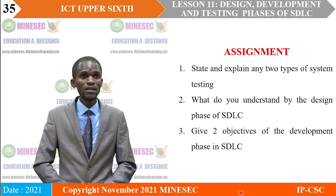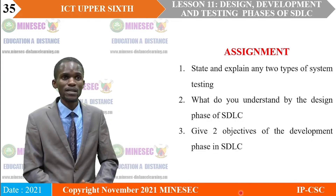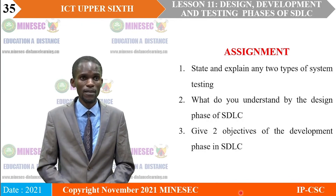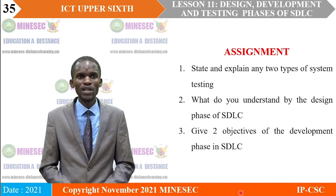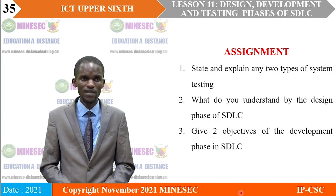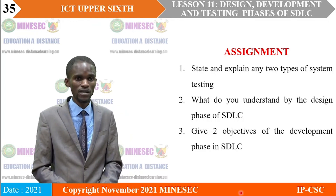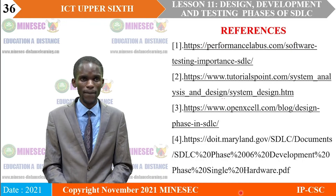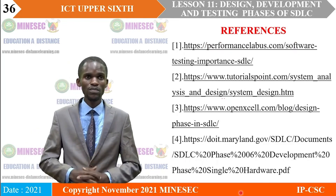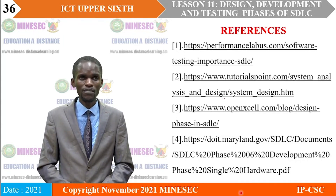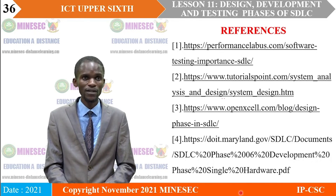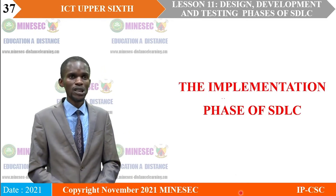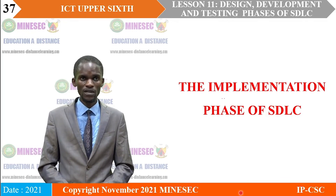Having come to the end of our lesson, you will need to carry out the following assignment before the next lesson: state and explain any two types of system testing; explain what you understand by the design phase of the SDLC; and give two objectives of the development phase in the SDLC. The references used to prepare this lesson are listed — going through them will give you more understanding. Our next lesson is going to be on the implementation phase of the system development life cycle.